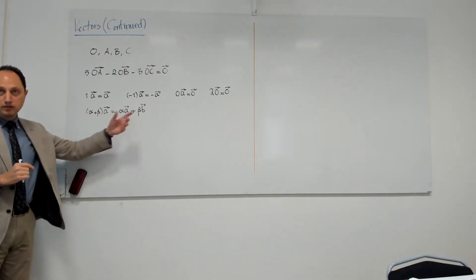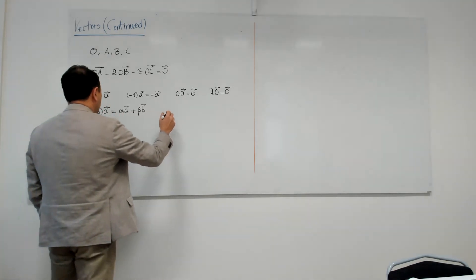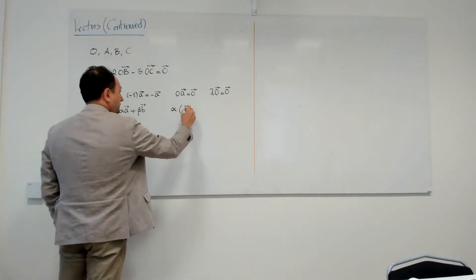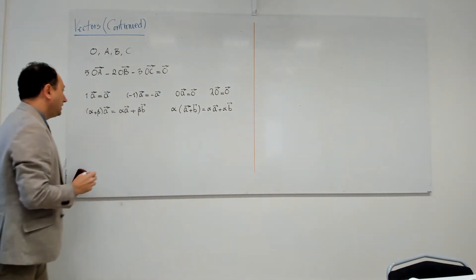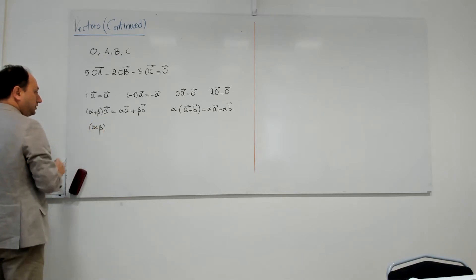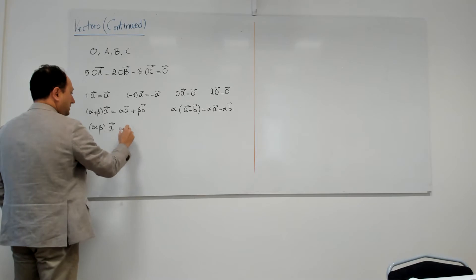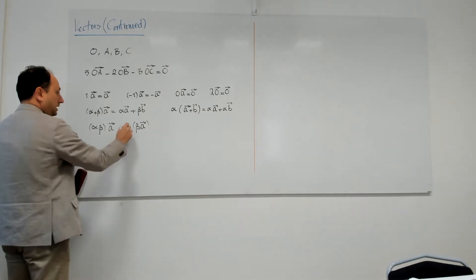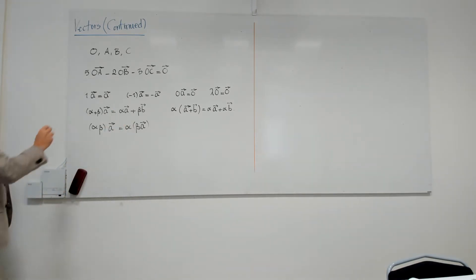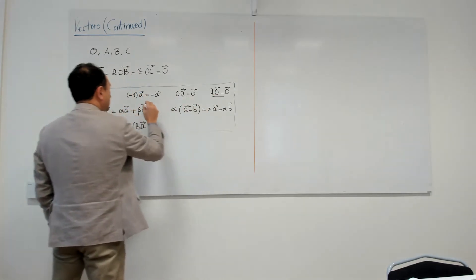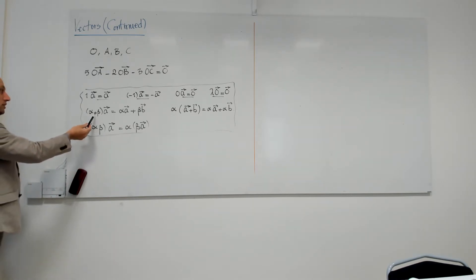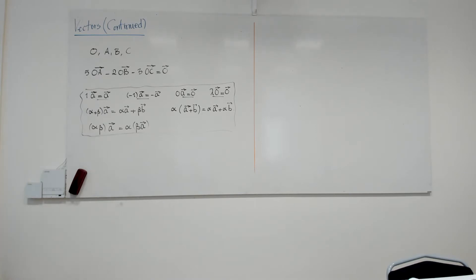Note that the addition here is between two numbers, while the other is addition between two vectors — even though I use the same notation. There's another property: if I have a number alpha times the sum of two vectors, I can write it as alpha times a plus alpha times b. Finally, if I multiply two numbers together first and then multiply by the vector, it doesn't matter if I instead multiply the first number by the vector and then by the second number. These are the important properties.